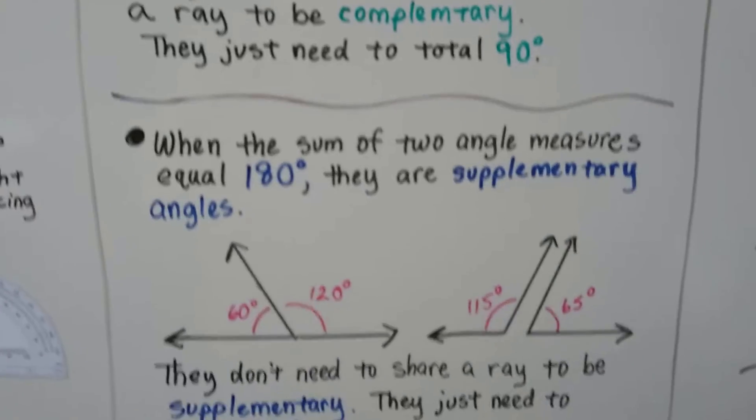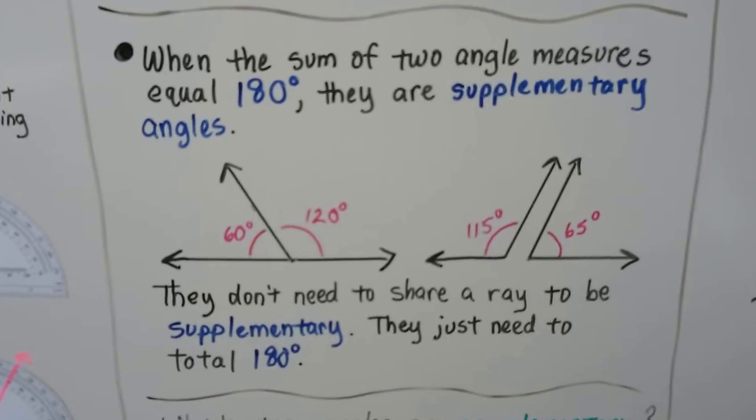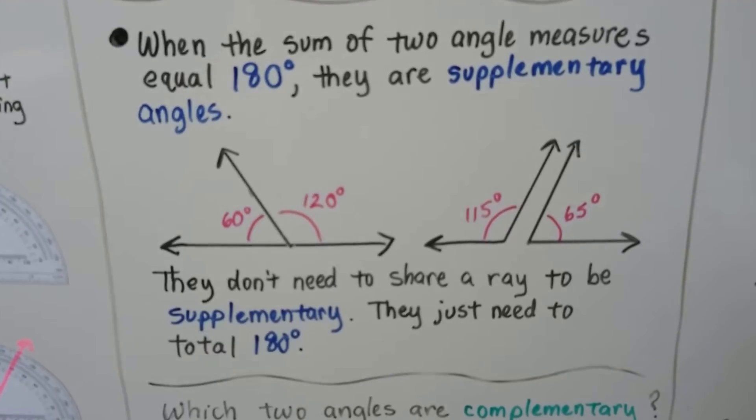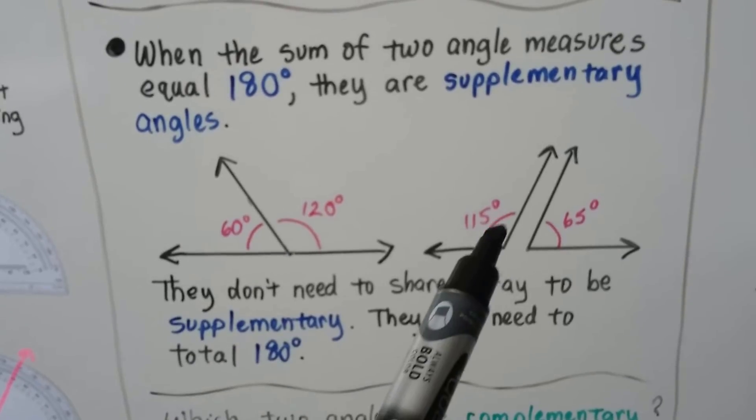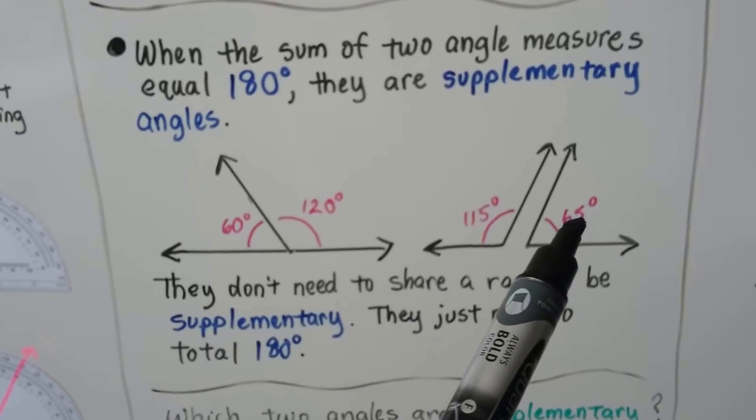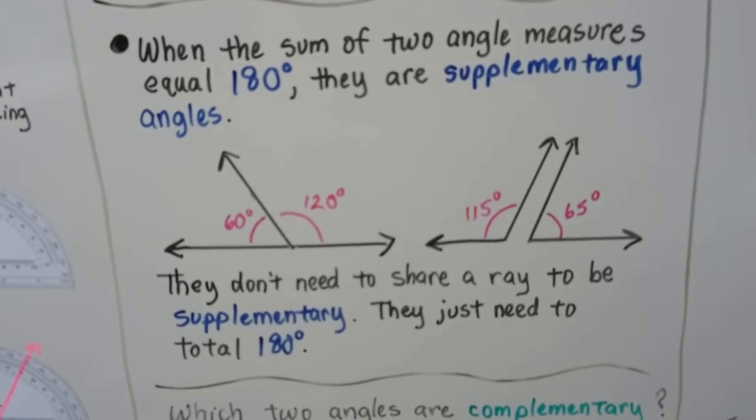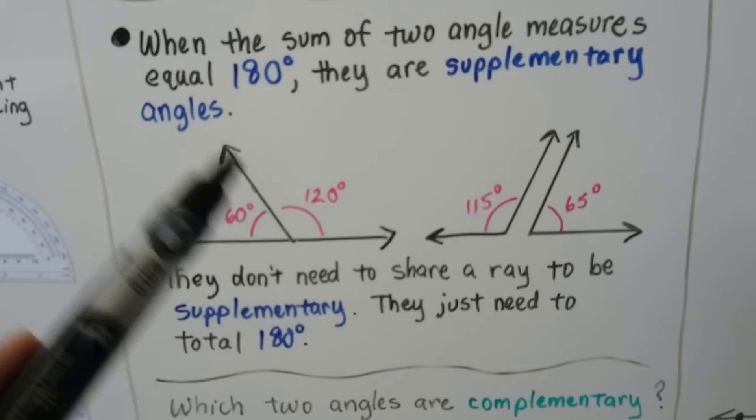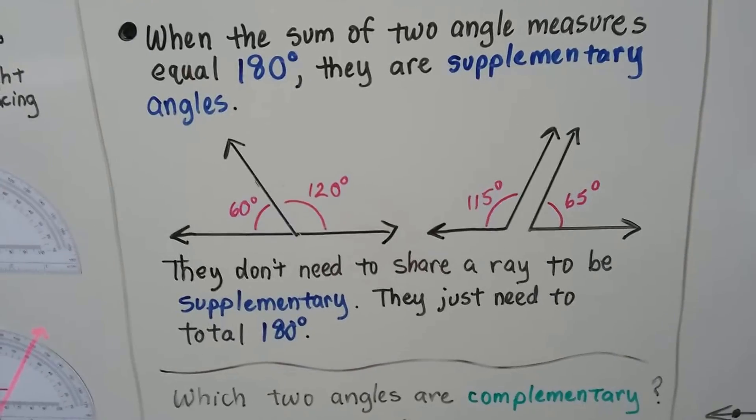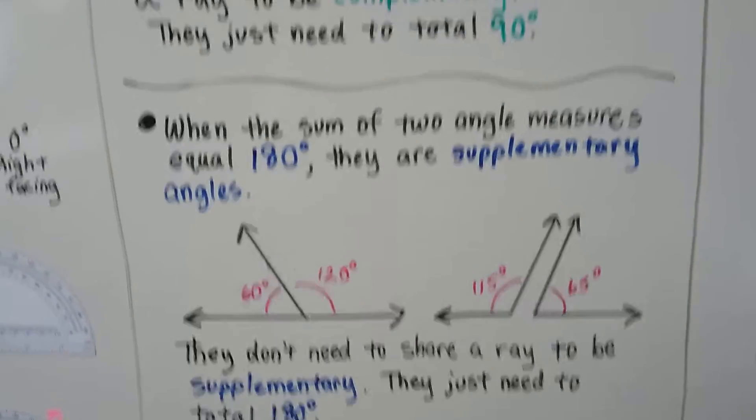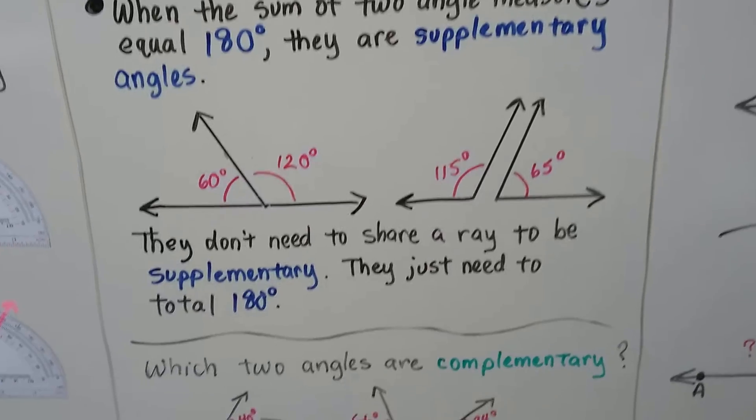When the sum of two angle measures equal 180 degrees, they're supplementary angles. So 60 and 120 equals 180. So these are supplementary angles. 115 plus 65 equals 180. So they're supplementary angles. And they don't need to share the ray to be supplementary. They just need to total 180 degrees. So complementary is 90 degrees. Supplementary is 180 degrees.